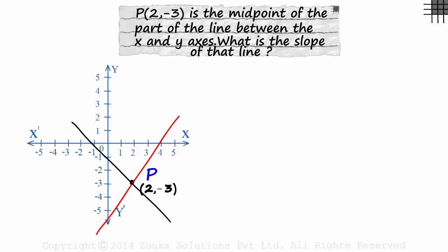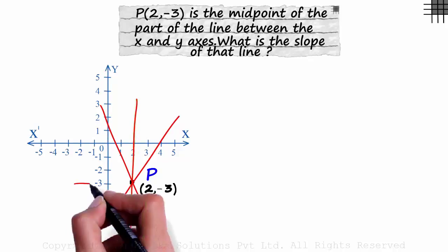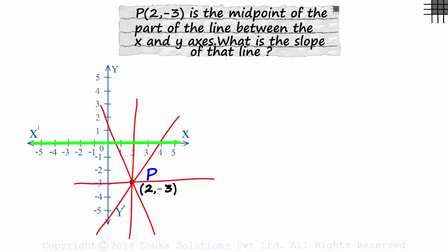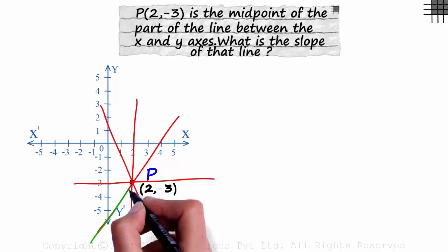For the same reasons, a line like this is also not possible. The midpoint has to be on the segment. A line like this, parallel to the y axis, is also not possible as the segment is not formed at all. This line will not intersect the y axis. And this line which is parallel to the x axis is also out of question as it does not intersect the x axis. This is the only kind of line that makes sense.